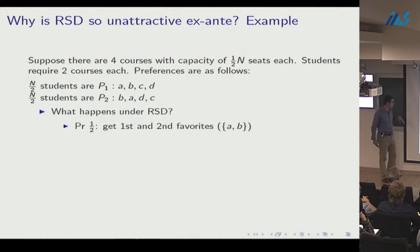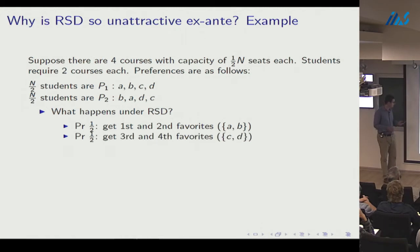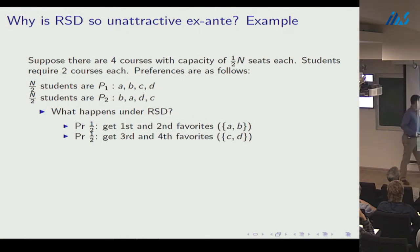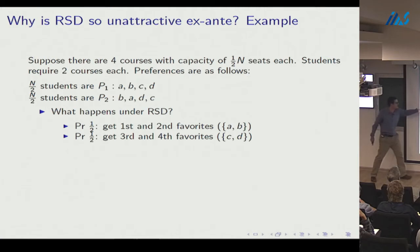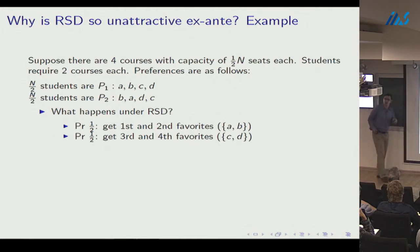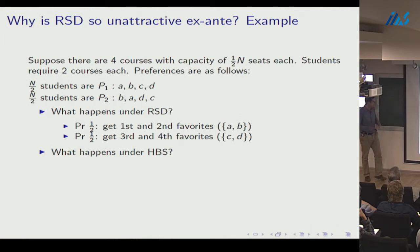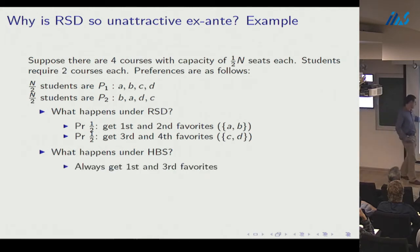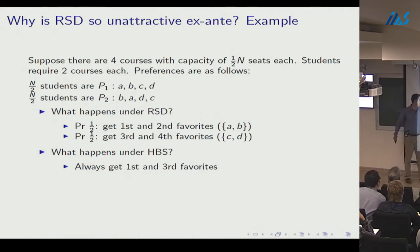Under the dictatorship, if you're in the first half of the choosing order you get your bliss point (A and B); if in the second half, you get the leftovers (C and D), regardless of type. Under the draft, students always get their first and third favorite courses: in round one P1 types take A and P2 types take B; both reach capacity; in round two P1 types take C and P2 types take D. Truthful play is a Nash equilibrium in this particular example.